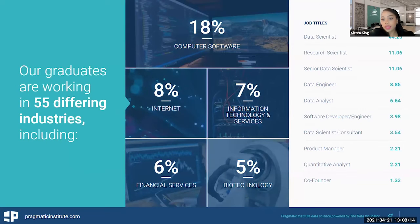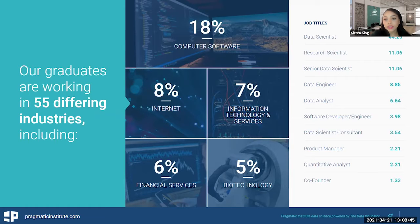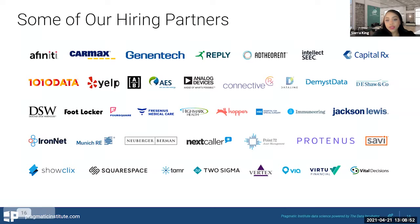Our graduates are working in 55 different industries. Some of the common industries we see are computer software, internet, IT, financial services, and biotech. Typical job titles include data scientist, data analyst, research scientist, software developer, and product manager. Here is a short list of some of our data science fellowship hiring partners. Many of these companies are also hiring for data analyst roles, but we'll be focused on building a separate network of hiring partners dedicated solely to our data analyst program as well.